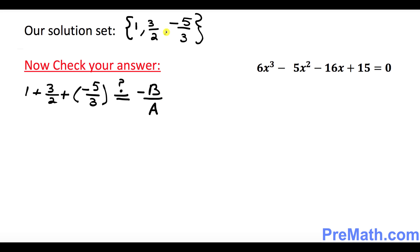And now you might be wondering what is negative B over A. In our case, A equals 6, B equals negative 5, C equals negative 16, and D equals 15. So minus B over A is going to be negative of negative 5 over 6. Negative and negative become positive 5 over 6.